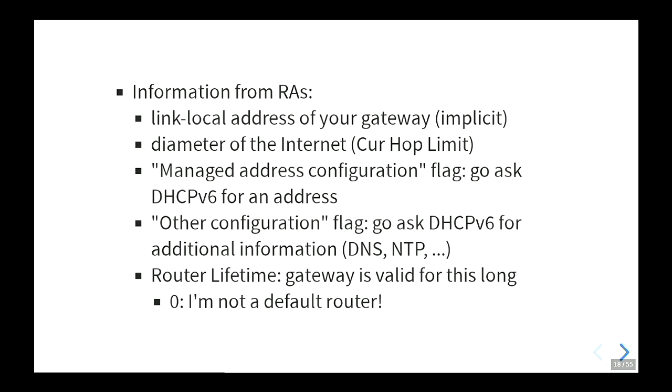The router advertisement contains the hop limit. It has two flags: one means 'I don't actually have a prefix for you, go to DHCPv6'; and the other means 'I have a prefix for you, but for other information like which resolver or NTP server to use, ask DHCP.' It also has a time value for how long the gateway is valid — if that is zero, don't use that thing as a default router.